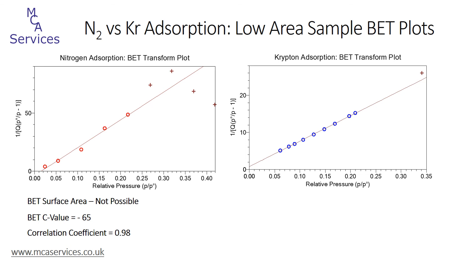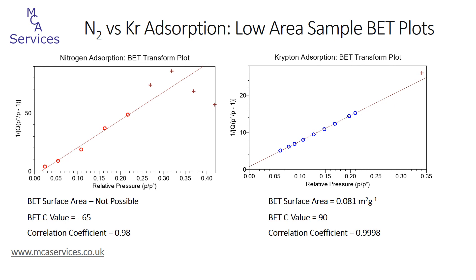The BET transform plot for krypton, on the other hand, is totally different, as we would expect from a reliable looking isotherm. The BET range can be fitted with good linearity throughout a significant number of relative pressure data points, shown by the blue circles. The BET surface area is 0.081 square meters per gram, the BET C value is positive, and the correlation coefficient is high. So we can say with confidence that the BET surface area of this material is much better represented by krypton adsorption than by nitrogen adsorption.